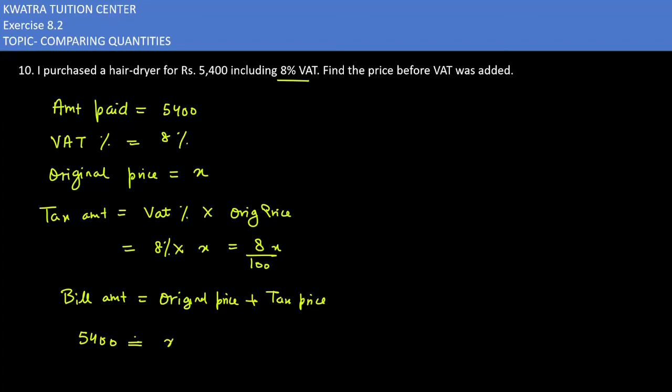Original price we don't know, so it would be X. Tax price is how much? 8X over 100. Now what will you have on the left side? 5400.